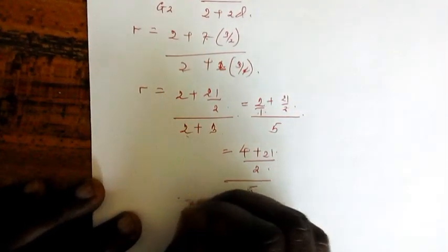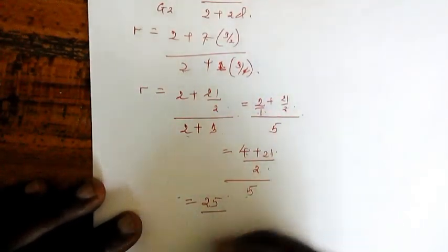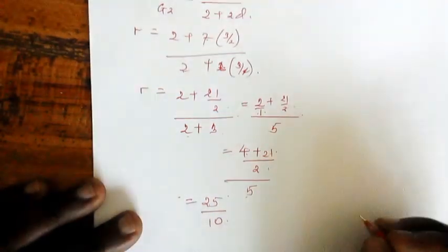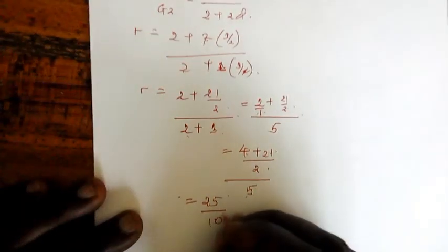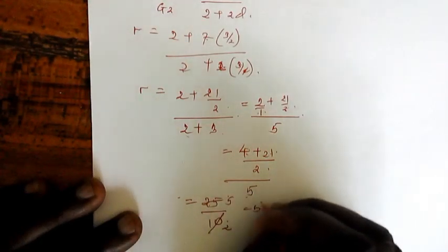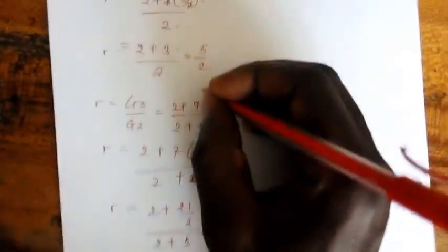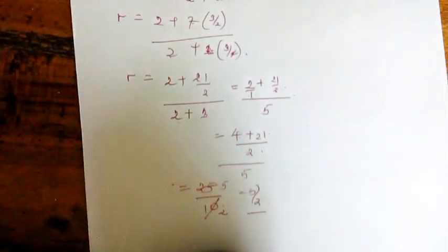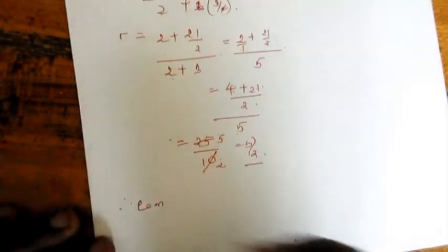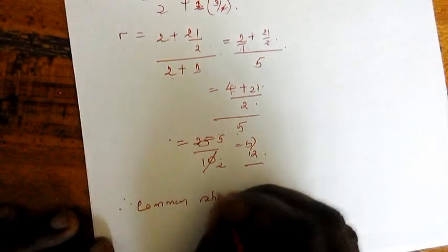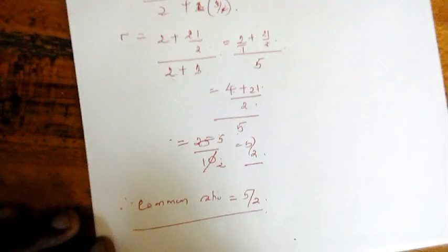This is the same, it's exactly the same as the answer we got at the beginning. So you say: therefore, common ratio equals 5 over 2, and that was the end of our question.